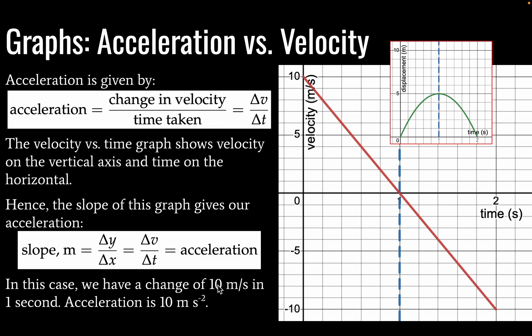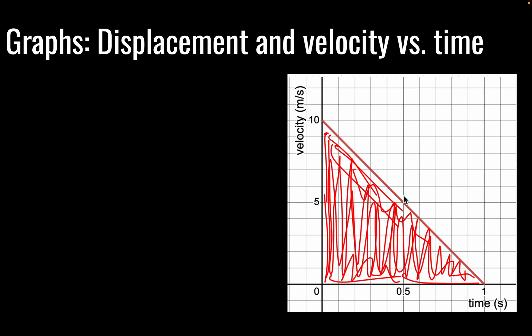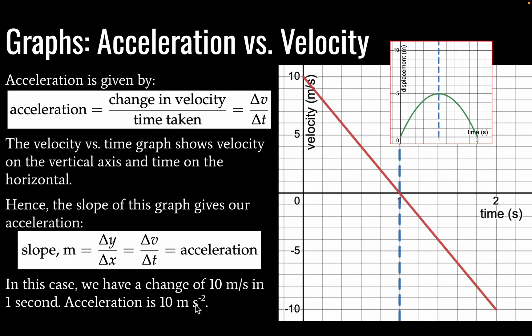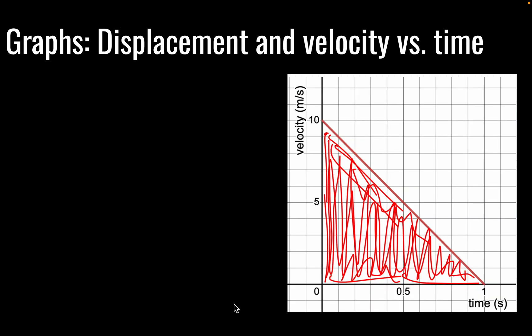In any case, we have a change of 10 meters per second in one second. As you can see here. So our acceleration then must be 10 meters per second squared, which is about gravitational acceleration. Pretty close.